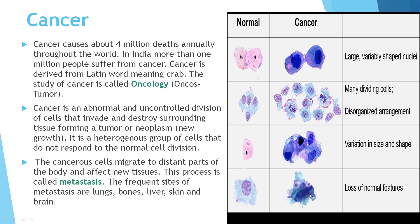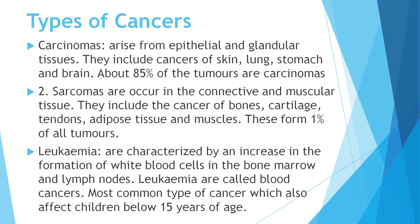Types of cancer: First, carcinomas arise from epithelial or lining tissue and glandular tissues, including cancers of the skin, lung, stomach and brain. About 85% of tumors are carcinomas. Second, sarcomas occur in connective and muscular tissue, including cancers of bone, cartilage, tendons, adipose tissue and muscles, forming just 1% of all tumors.